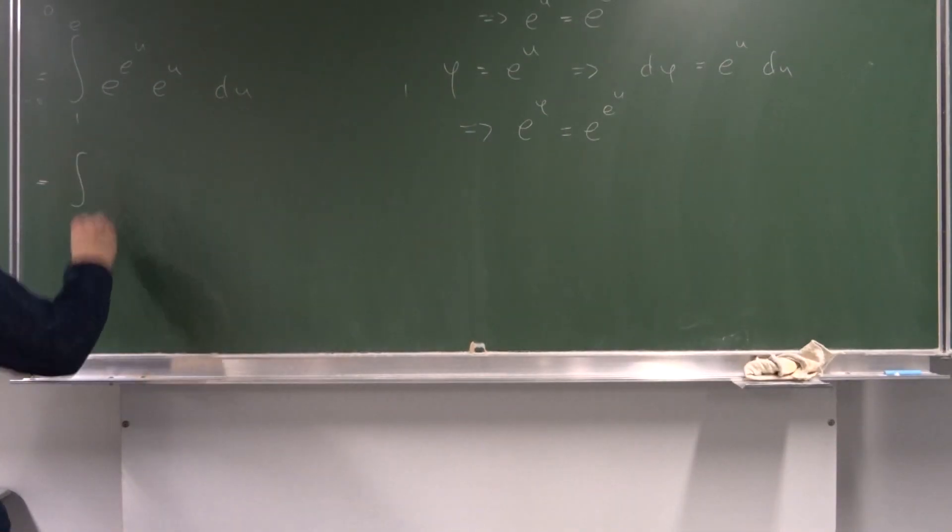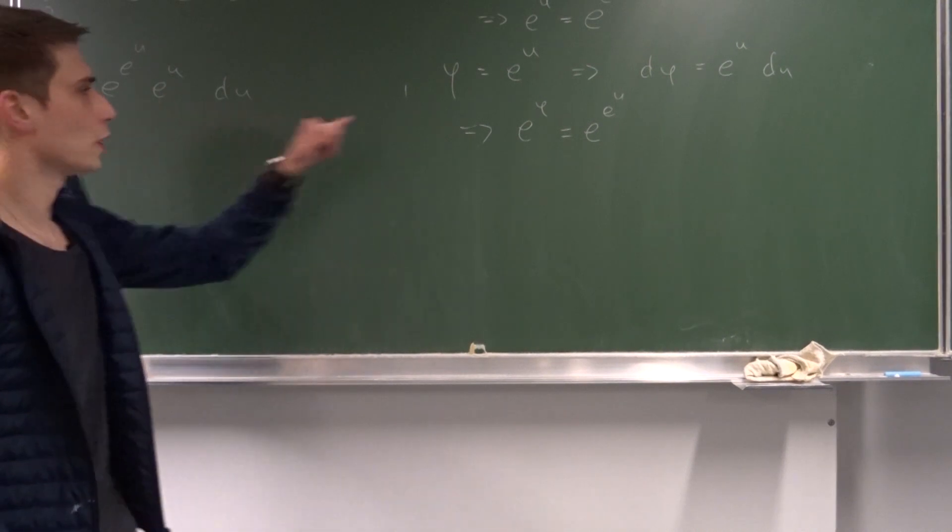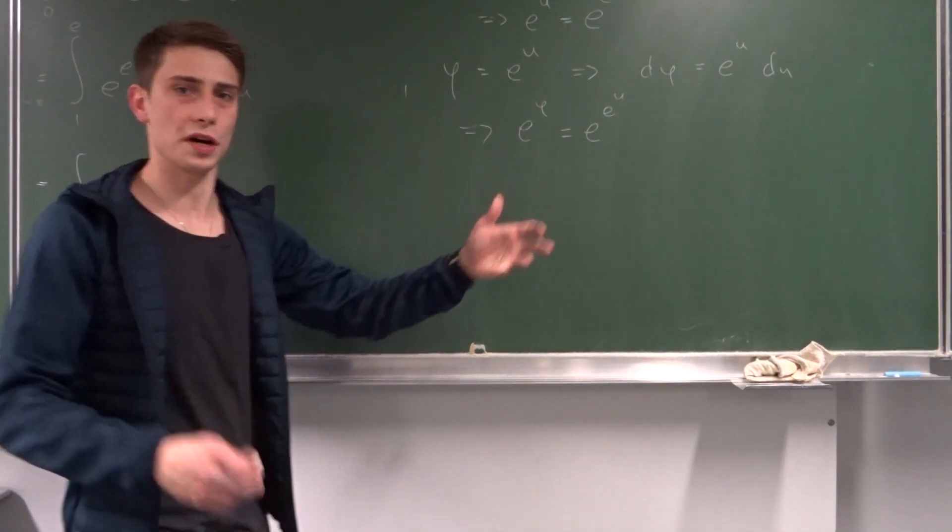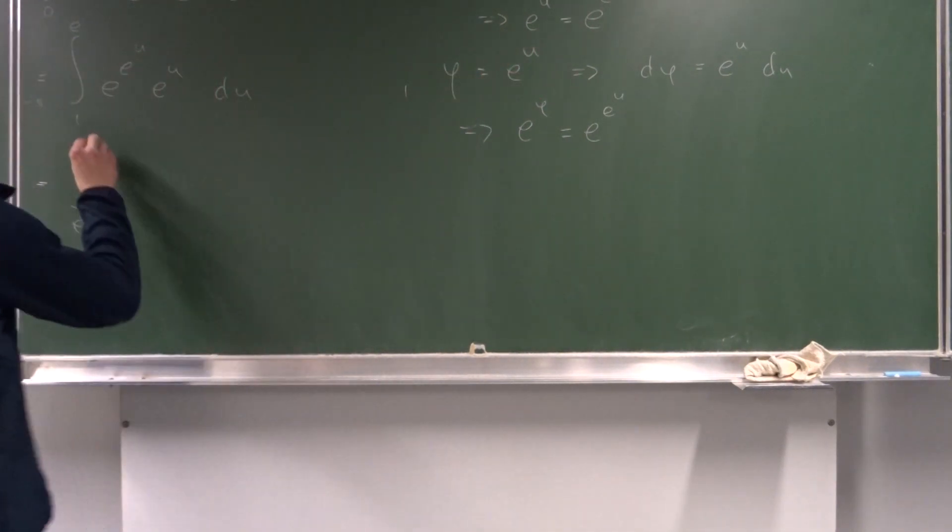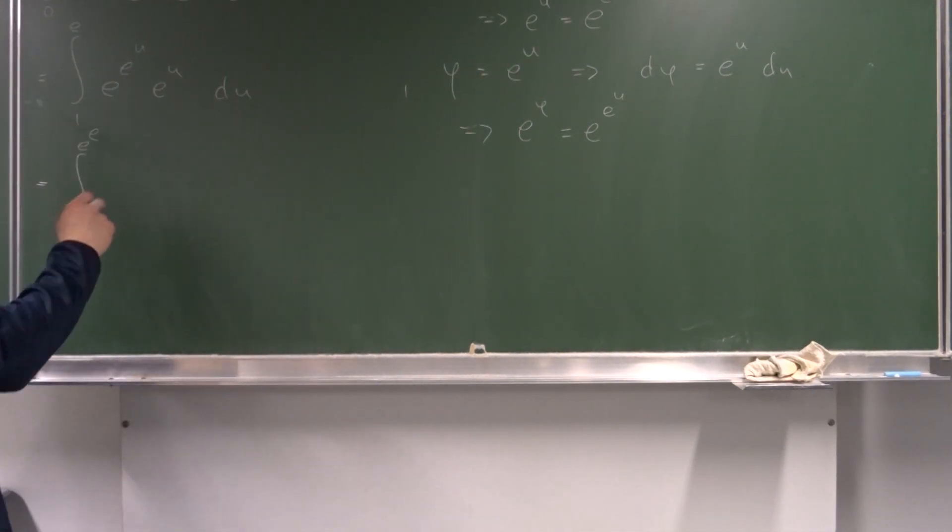So, what we end up with is just the integral from... So, if we plug 1 into here, that means that phi is just equal to e. And if we plug e into here, that's e to the e. So, our new limits are from e to e to the e.